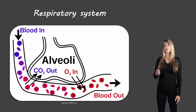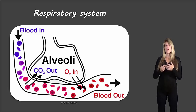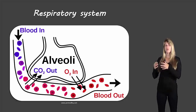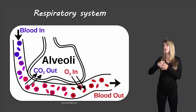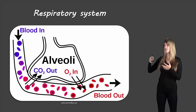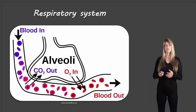Here's how that gas exchange occurs at the alveoli. The blue cells represent blood cells containing carbon dioxide. They come close to the alveoli and give up that carbon dioxide. The oxygen in the alveoli then moves to those cells, shown in red to indicate they now contain oxygen. They then go off to the heart to be pumped out to the cells of the body.